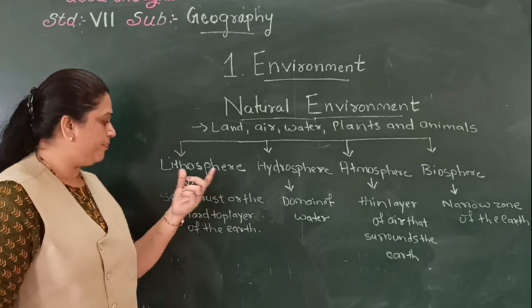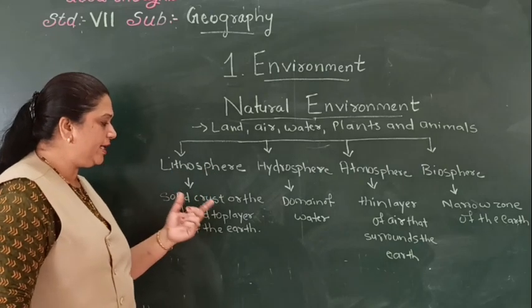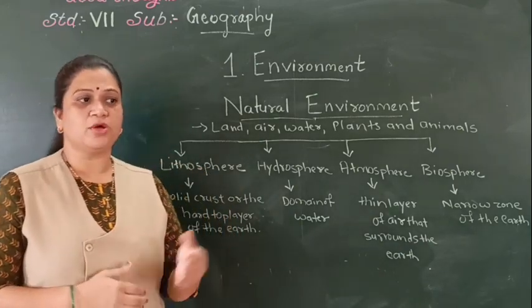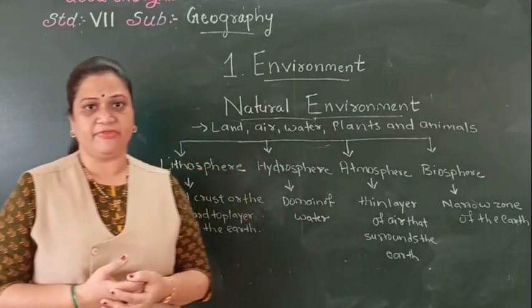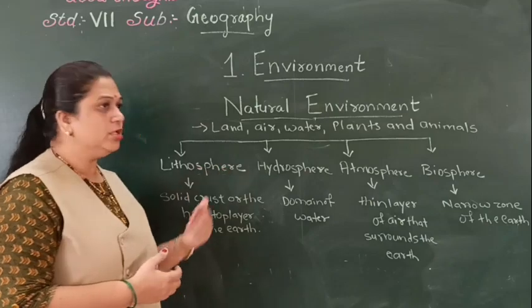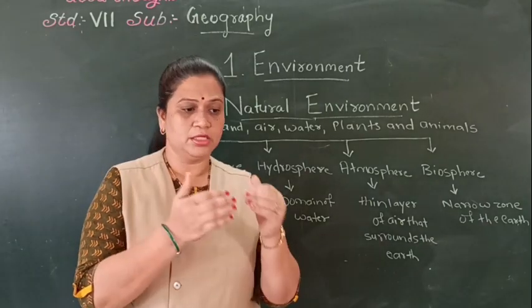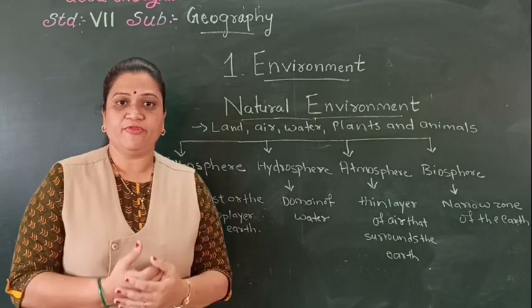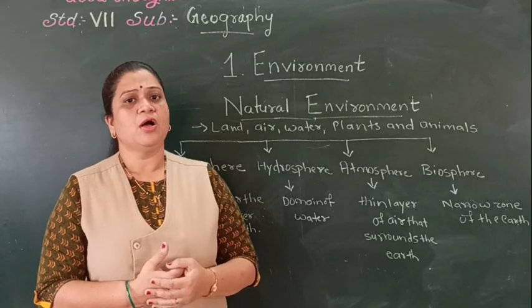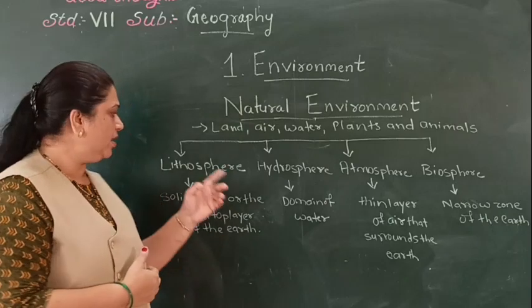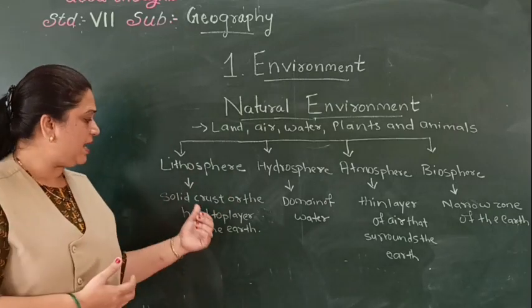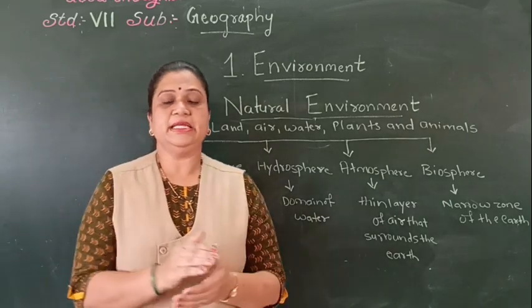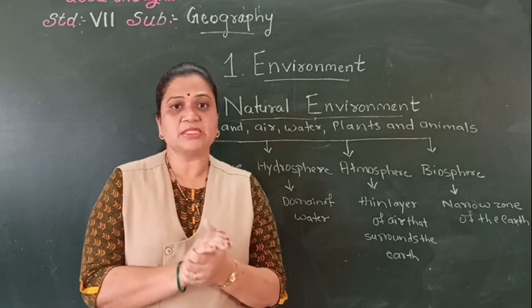The first one is the lithosphere. Lithosphere is the solid crust or the hard top layer of the earth's surface. It comprises of the soil and the top soil on the earth's surface. It is the hard solid crust made up of hard rocks and minerals.